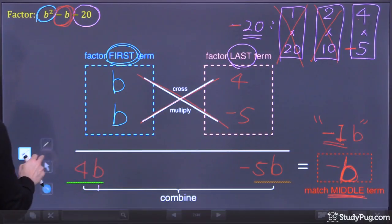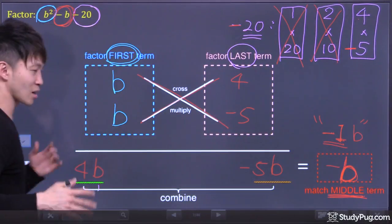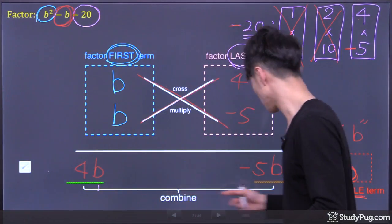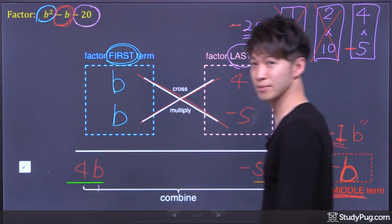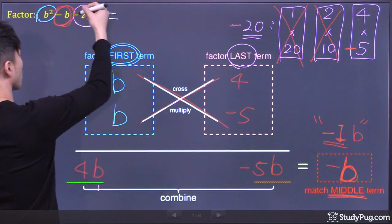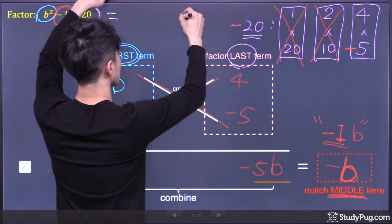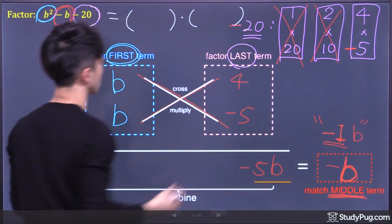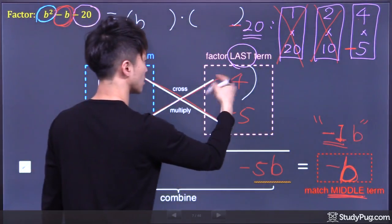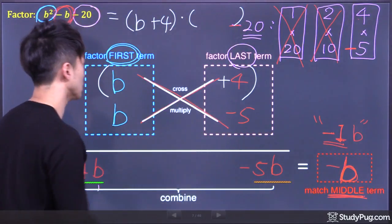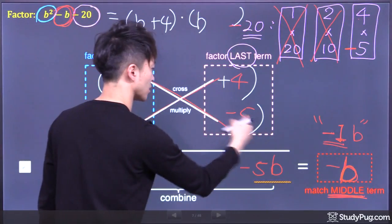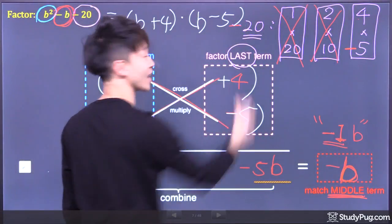Once again, that's the beauty of this method. This method provides a quick and easy way to check our answer. Beautiful. So this trinomial can be factored into the product of two polynomials. The first polynomial is b and positive 4. The second polynomial is b and negative 5.